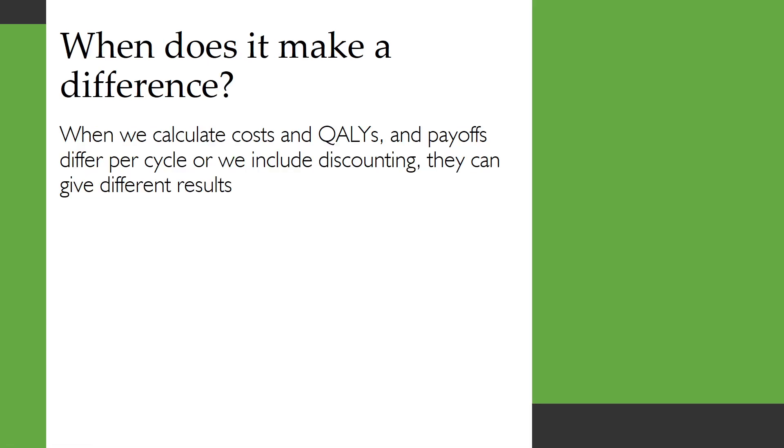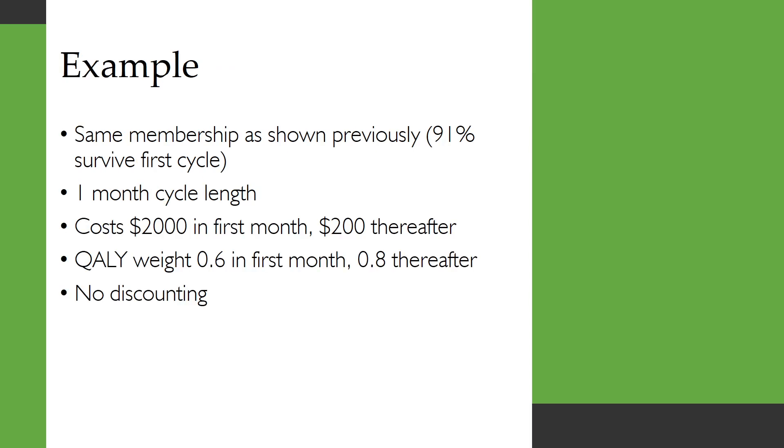So I've just shown that it doesn't make a difference when you're calculating life years and there's no discounting. So naturally you think when does it make a difference? Well it's when you're calculating things like costs and QALYs and those payoffs can differ per cycle or when we're including discounting, these methods can give different results.